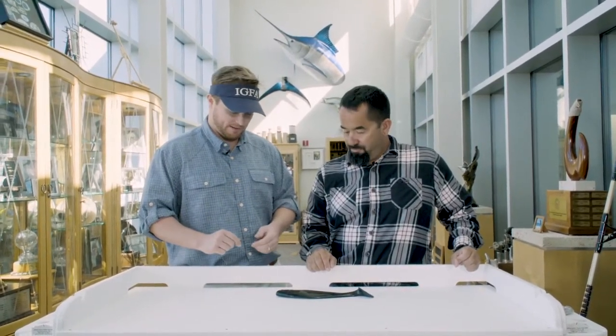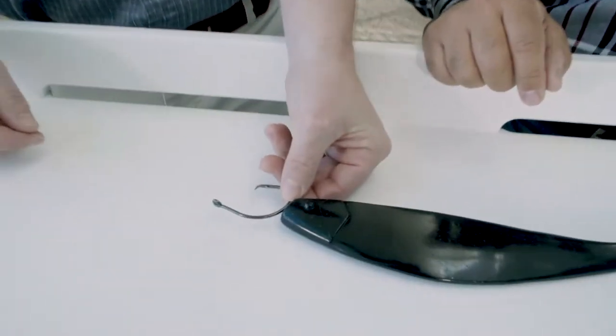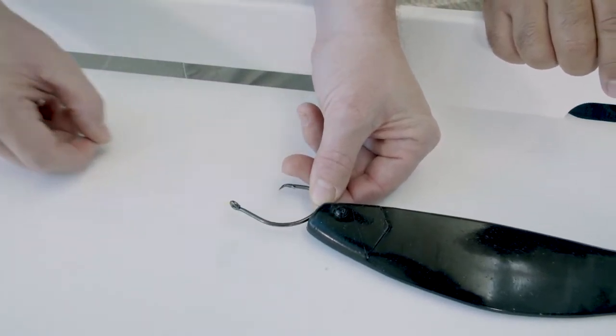The rule of thumb here and the IGFA rule is that the hook cannot precede the bait or be in front of the bait by more than one hook's length.